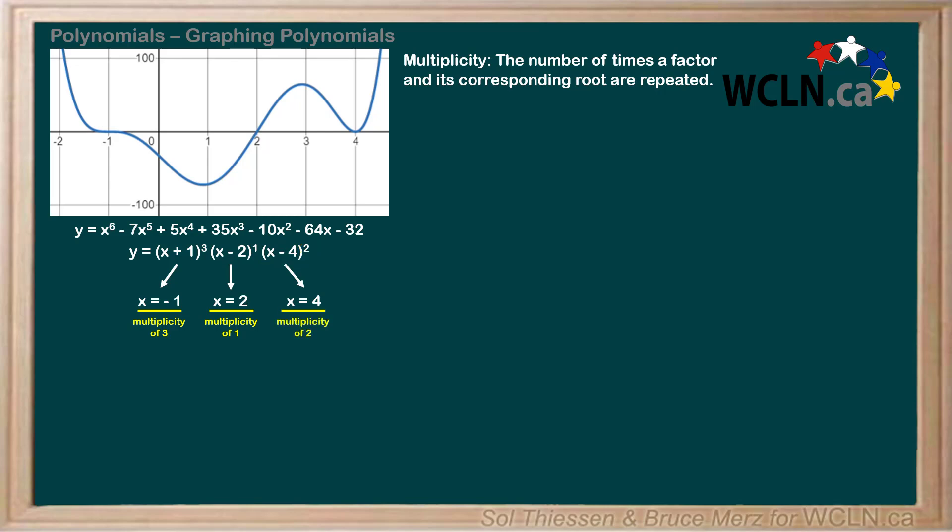As we observed earlier, the multiplicity of a root affects how the graph behaves around that root. Notice that at the roots of odd multiplicities, x equals negative 1 and x equals 2, the plot crosses through the x-axis. At the root of even multiplicity, x equals 4, the plot is tangent to the x-axis. It appears to bounce off the axis and doesn't cross over.